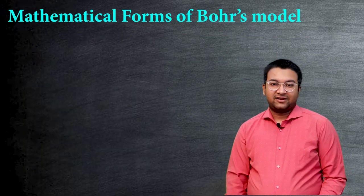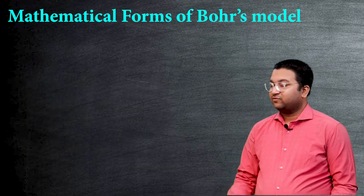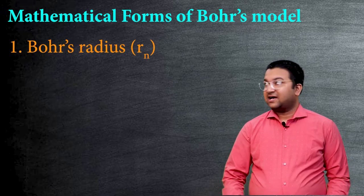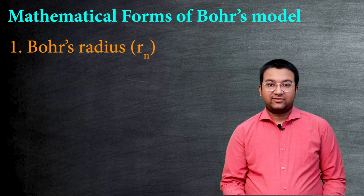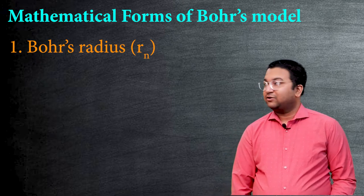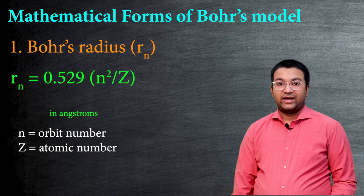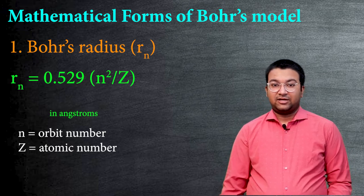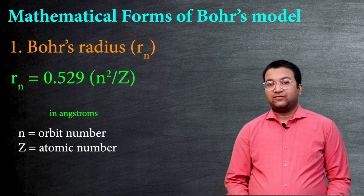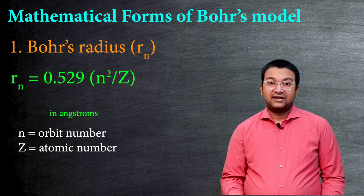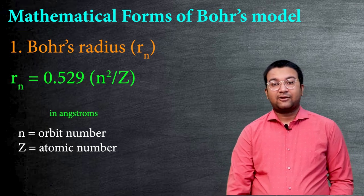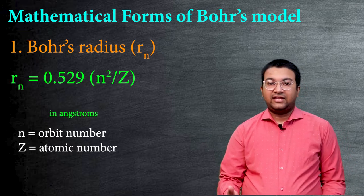Let's talk quickly about some mathematical formulae of Bohr's theory. The first one in the list is Bohr's radius. So Bohr's radius is taken as Rn, Rn is the radius of nth orbit. This Rn will be equal to 0.529 into n² upon Z angstrom, where n is the orbit number and Z is the atomic number. So all the atoms of entire single electron species can be included in this formula.